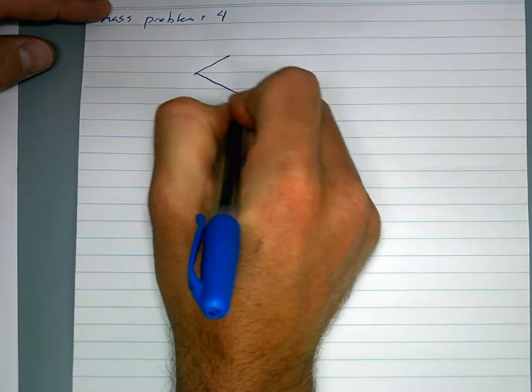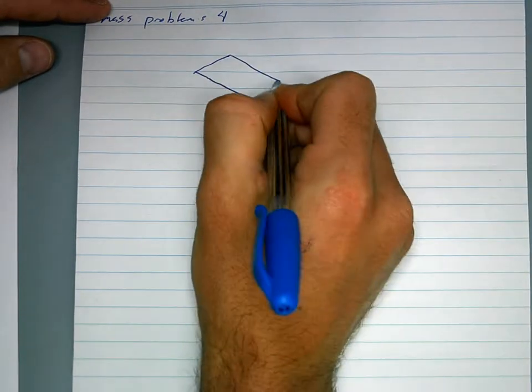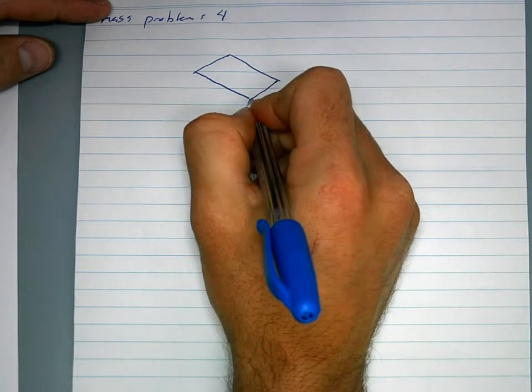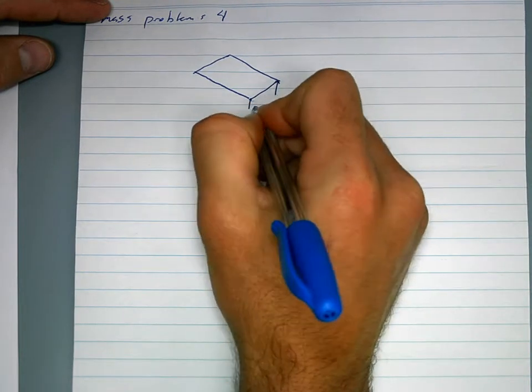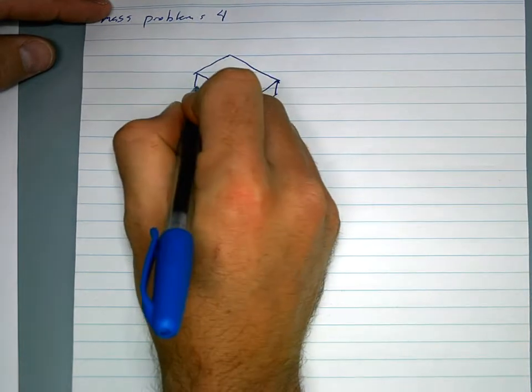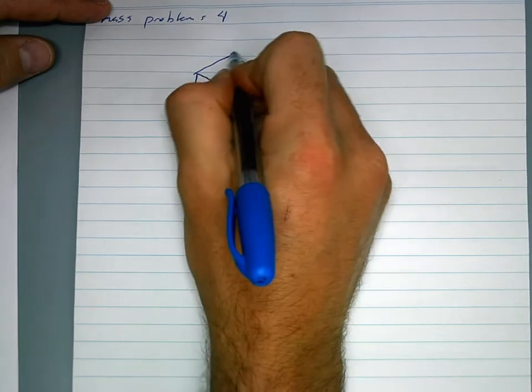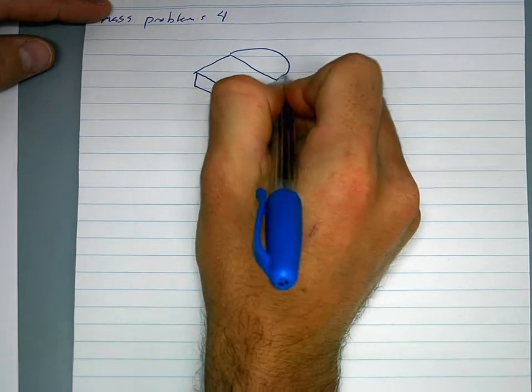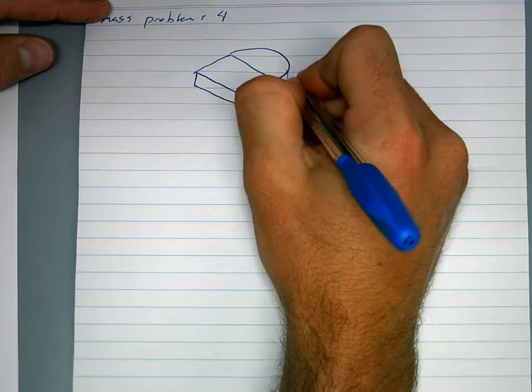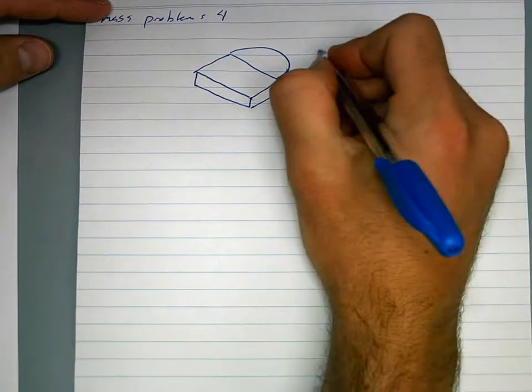So for example, if I had a block that looked like this, and it had a curve shape to it, what would be the mass of this one?